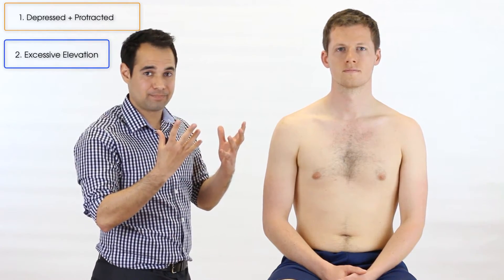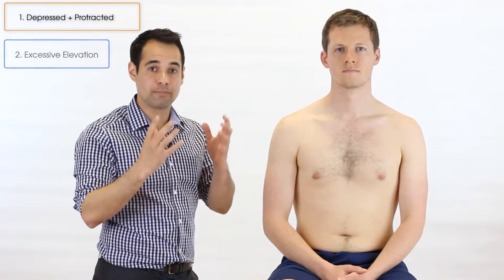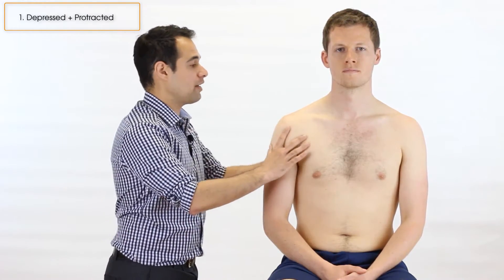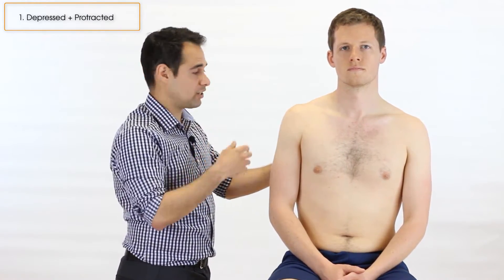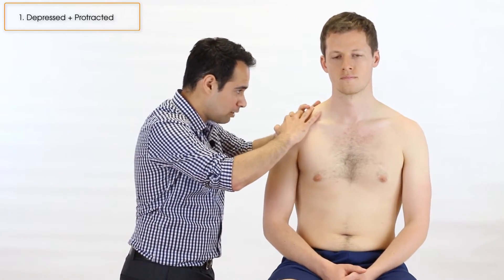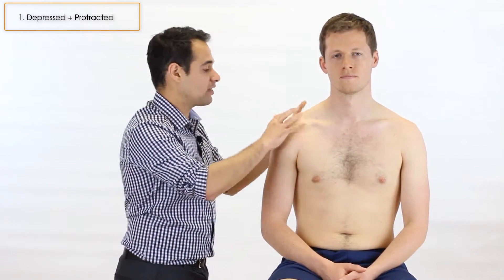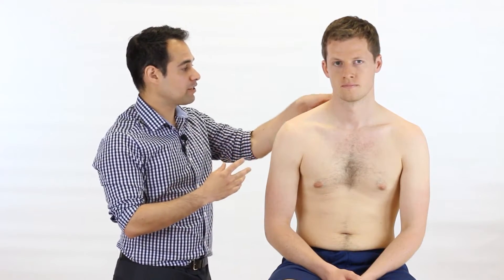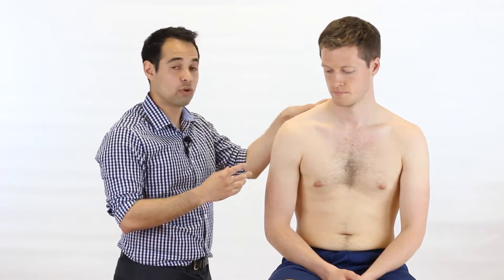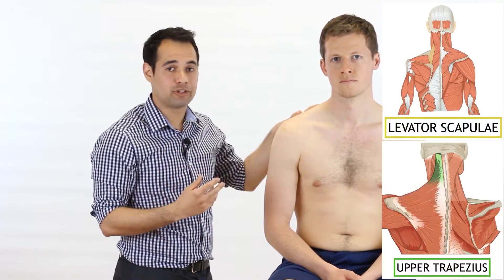The two most common presentations are number one, depressed and protracted, and number two, too elevated. A depressed scapula would be going downwards from neutral, and a protracted shoulder would be where the scapula is more forward than neutral. In this position, there is more stress placed on muscles around one side of the cervical spine, particularly levator scapulae and the upper trapezius muscles.